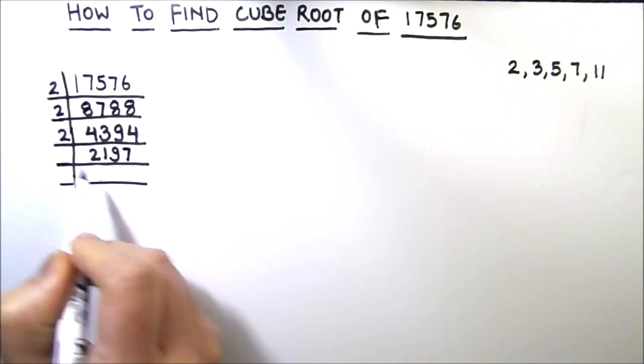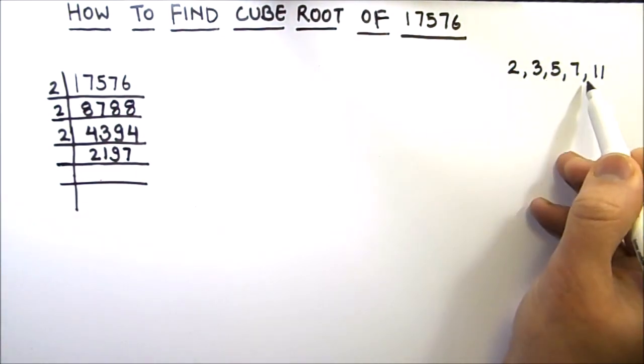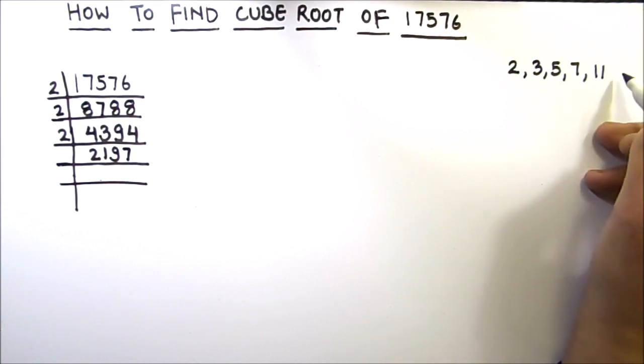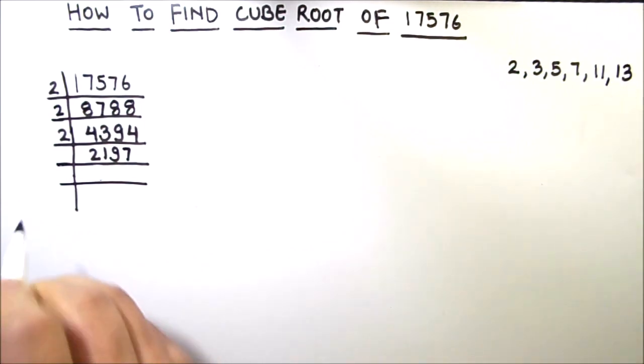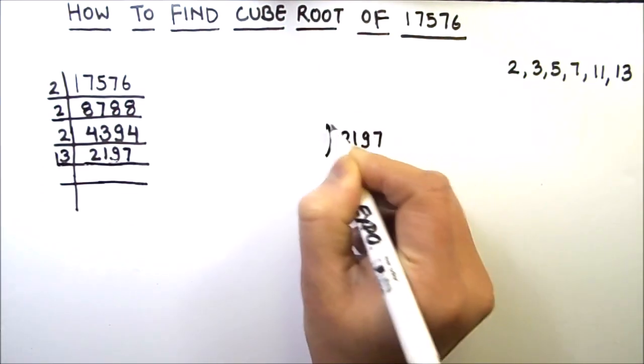Now this is an odd number. 2,197 is not divisible by 3, 5, 7, 11. So let's check the next prime number which is 13. Let us divide 2,197 by 13.